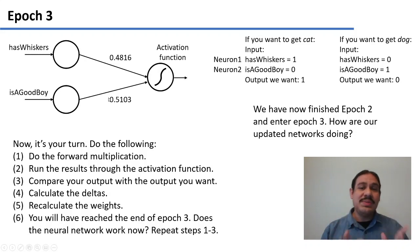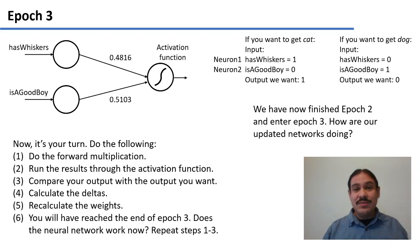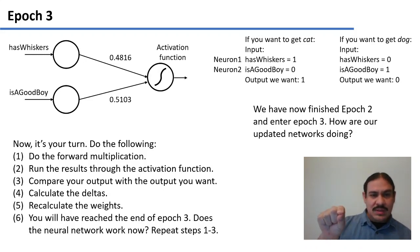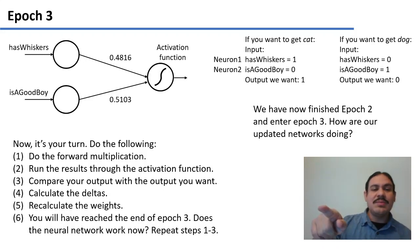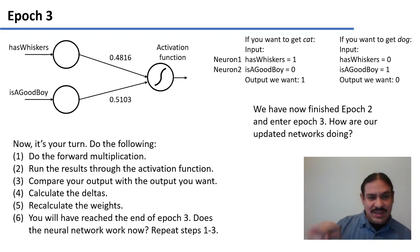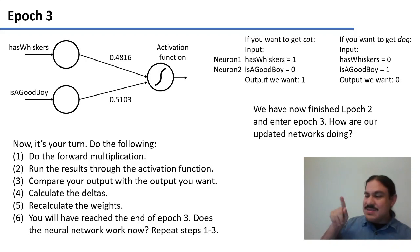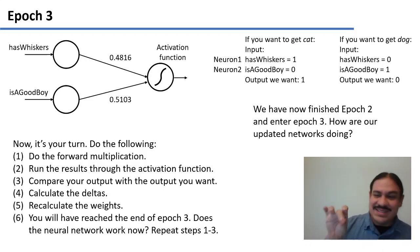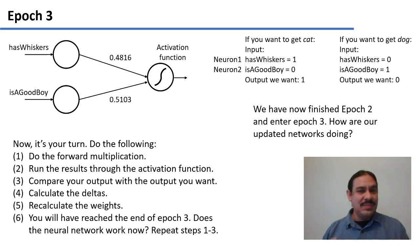You have all these results in the PDF. Now I want you to try the whole operation yourself before moving ahead. You need to do forward propagation, run those results through the activation function, compare the output you got with the output you wanted, calculate the error or deltas, back-propagate and recalculate the weights, reaching the end of one epoch, then forward-propagate again to see if your results are now correct. Please pause the video and come back to see the results.